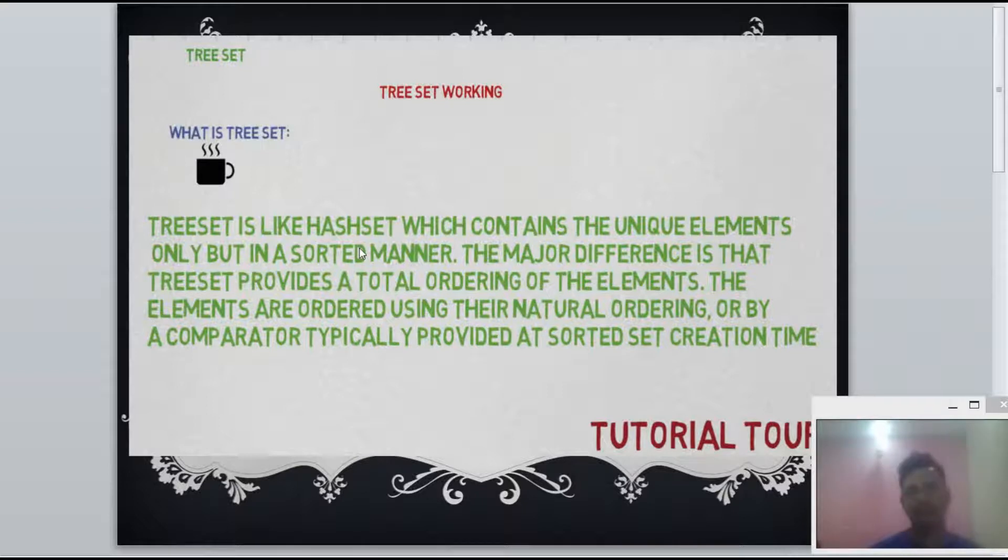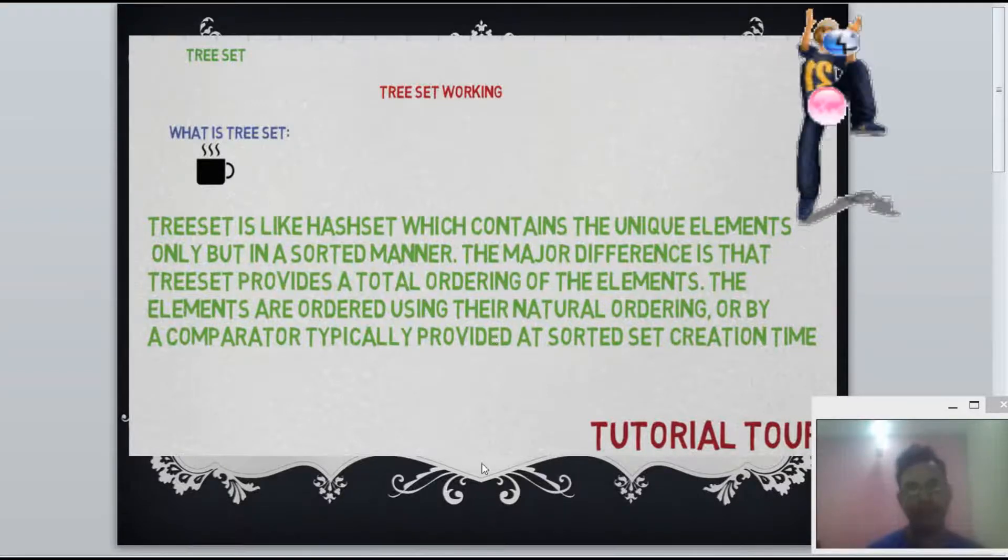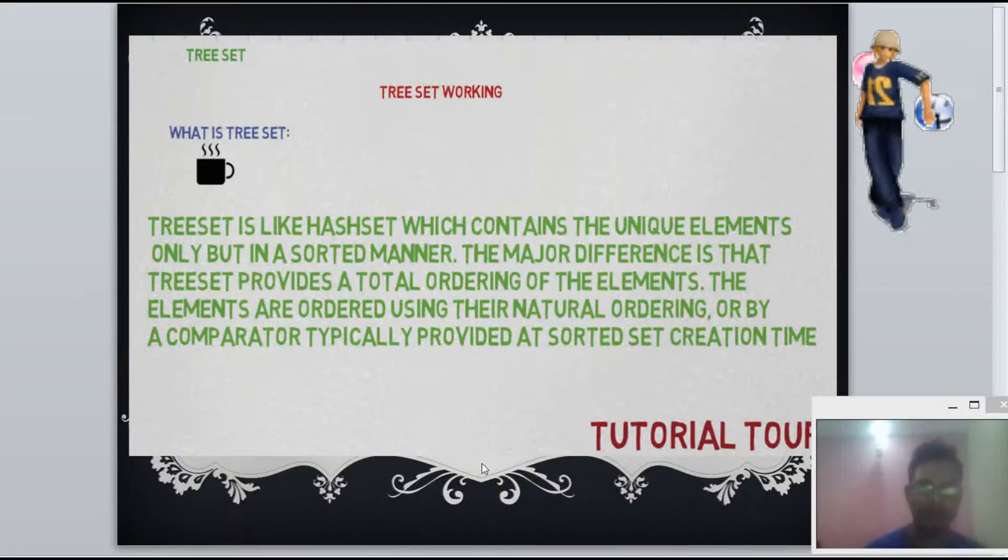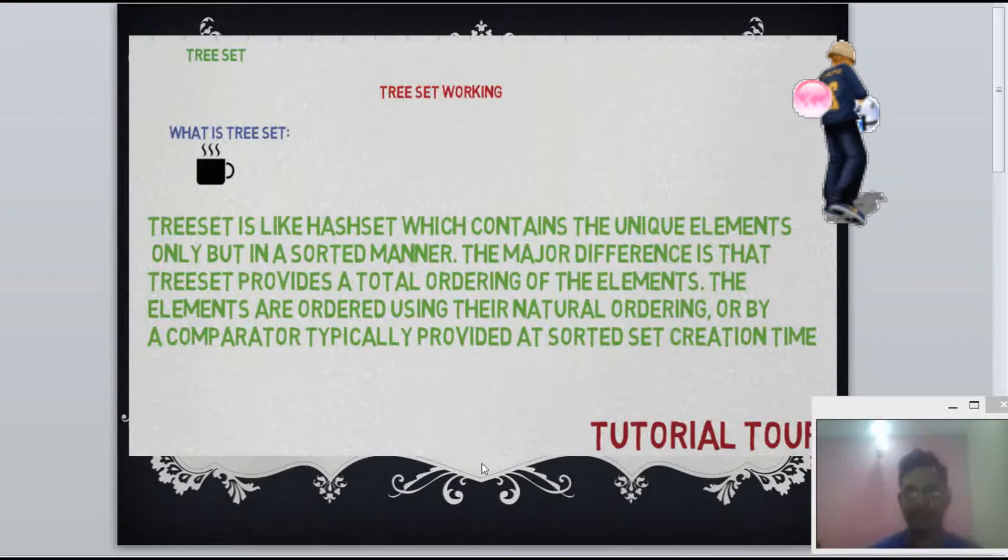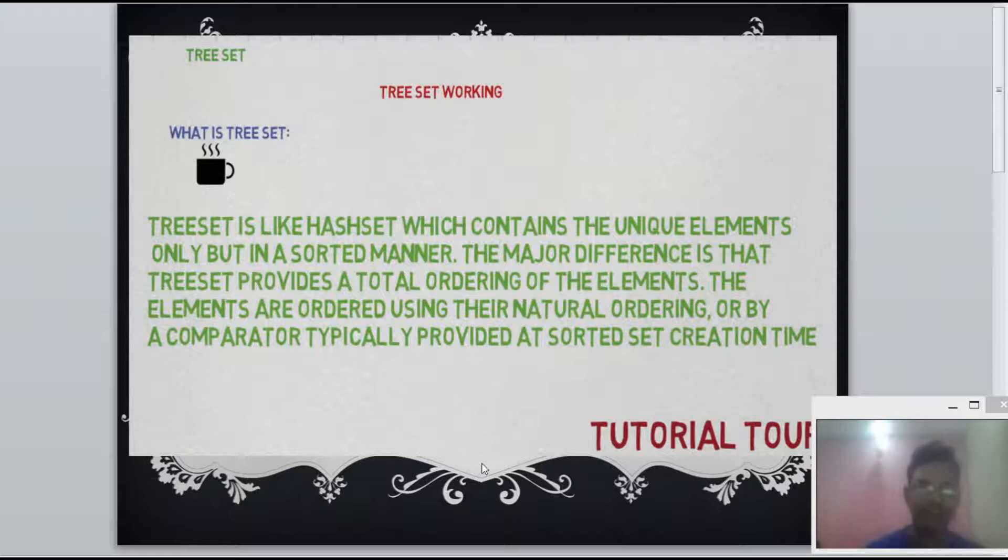What is TreeSet? TreeSet is like HashSet which contains unique elements only, but in sorted manner. The major difference is that TreeSet provides a total ordering of the elements. The elements are ordered using their natural ordering or by a comparator typically provided at the time of creation.